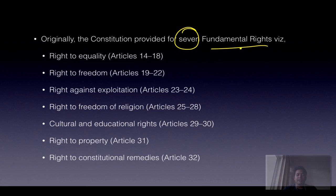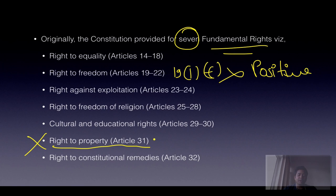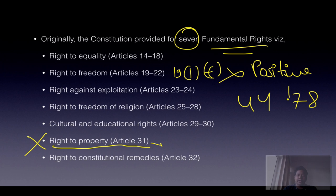Originally there were seven fundamental rights; however, the right to property is now gone. Also Article 19(1)(f) is also gone. These two rights contained property rights — the right to acquire property and the right not to be deprived of property except by law. Both were removed by the 44th Constitutional Amendment Act of 1978.